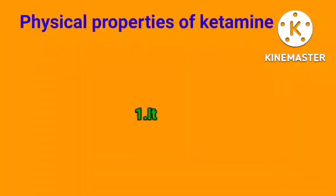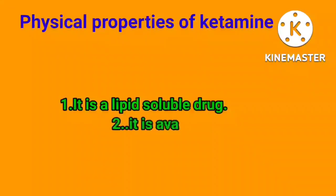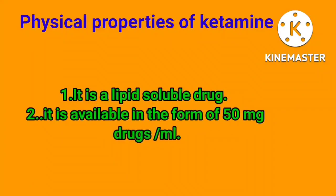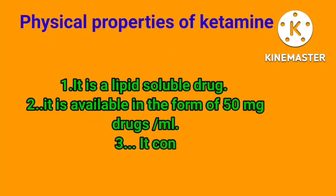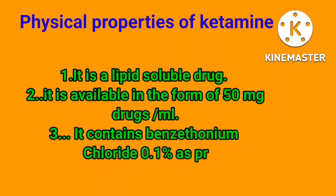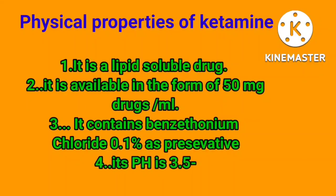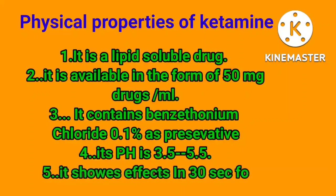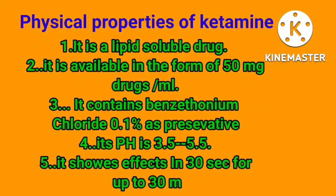Physical properties of ketamine: It is a lipid-soluble drug. It is available in the form of 50 mg per ml. It contains benzethonium chloride 0.1% as preservative. Its pH is 3.5 to 5.5. It shows effects in 30 seconds for up to 30 minutes.